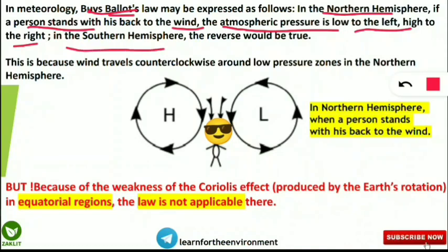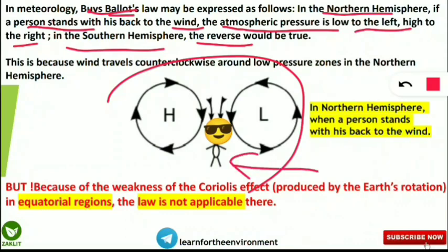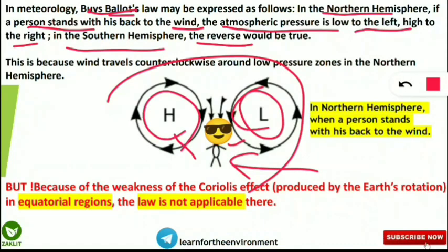In the Southern Hemisphere, Buys Ballot's Law is reversed: atmospheric pressure is high towards the left and low towards the right. As shown in the picture, if the person stands with their back to the wind, in the Northern Hemisphere the left side is a low-pressure zone and the right side is a high-pressure zone, while in the Southern Hemisphere it is the opposite.